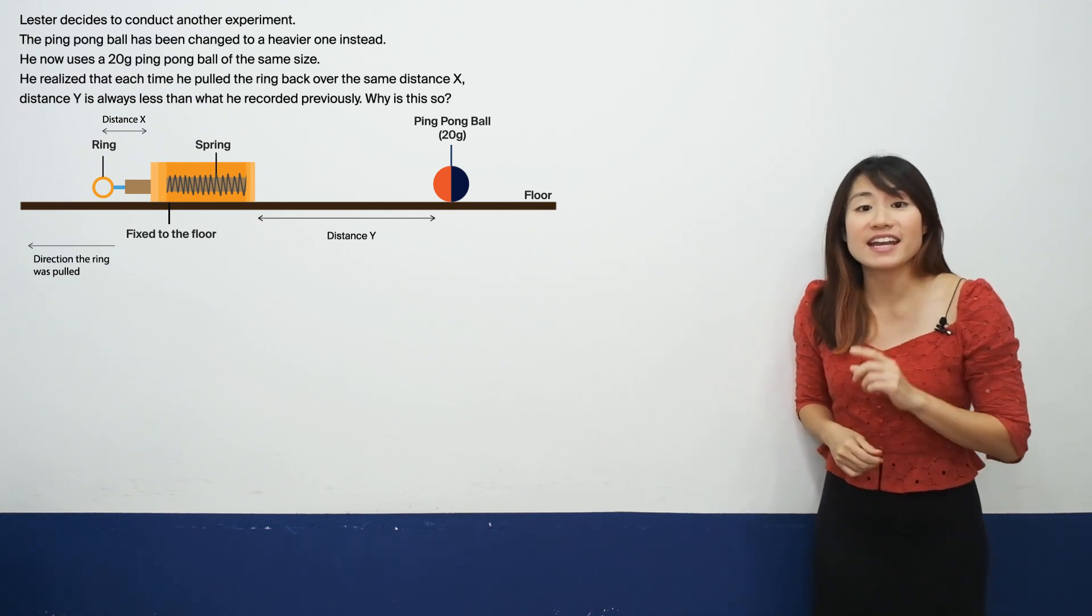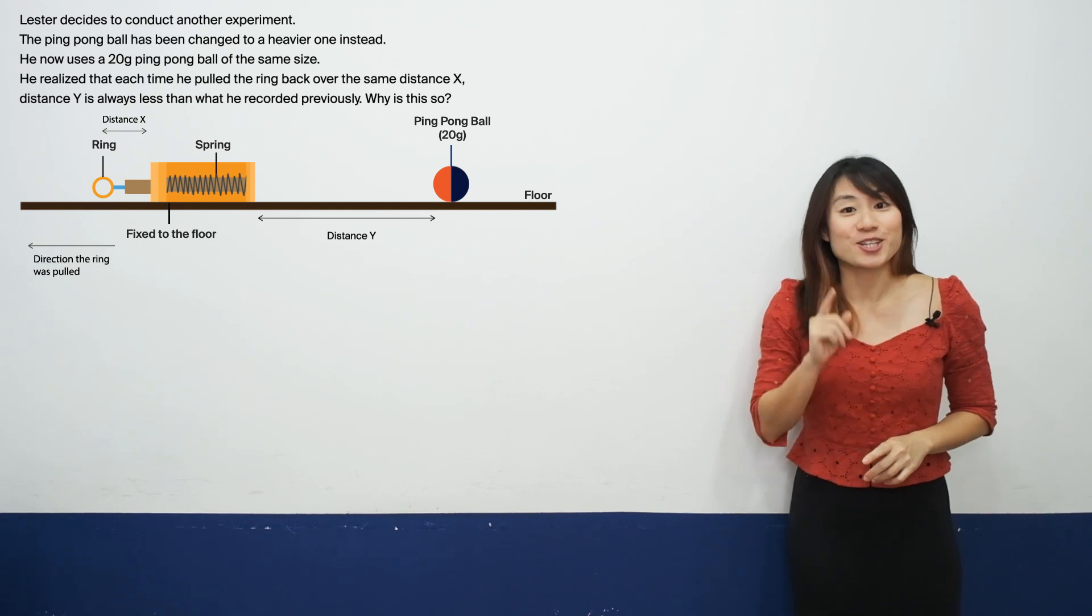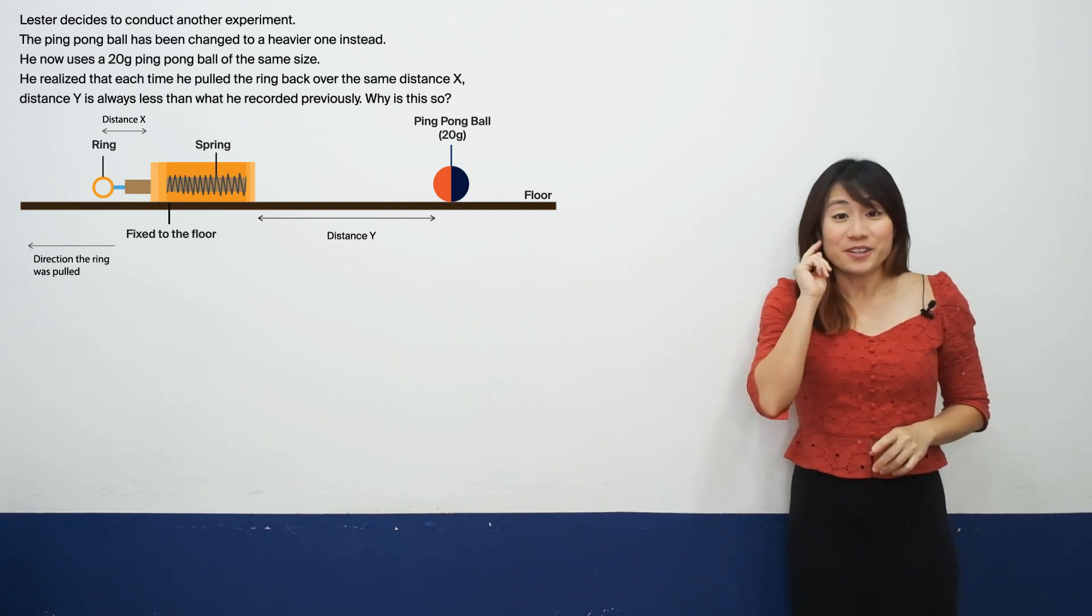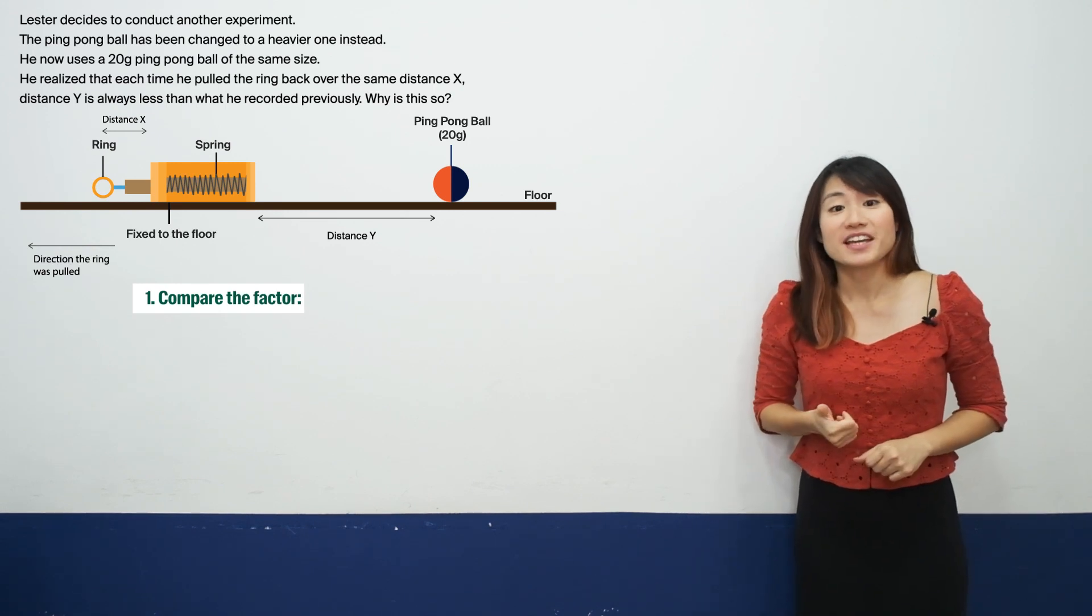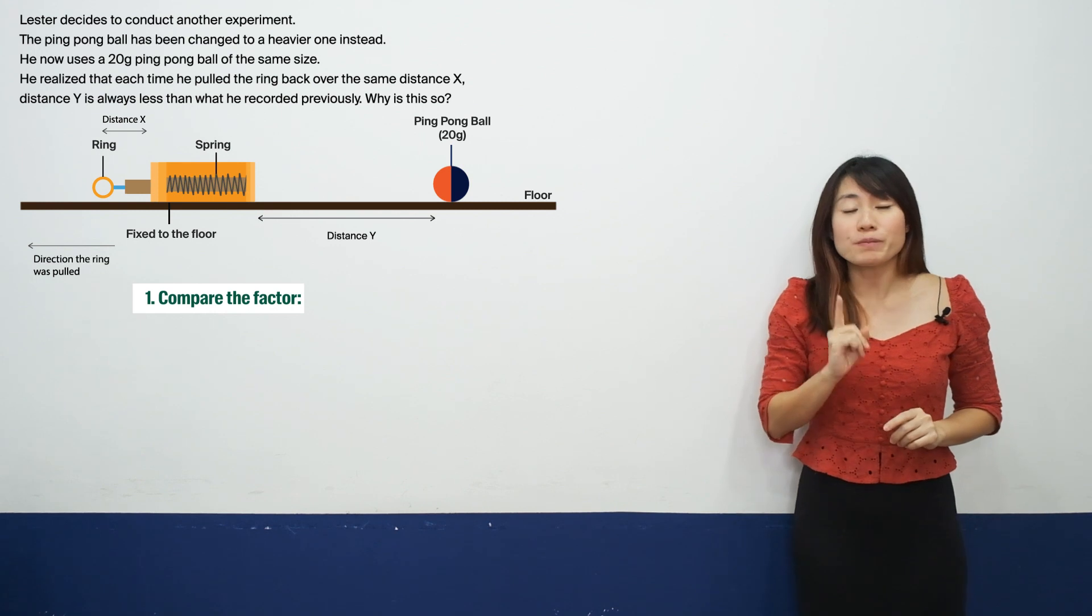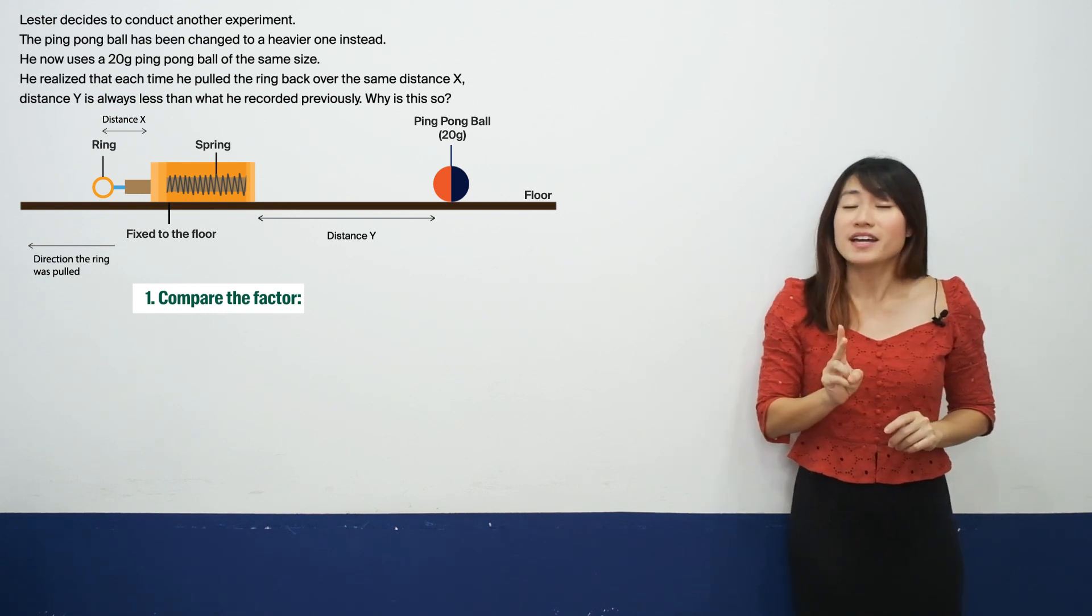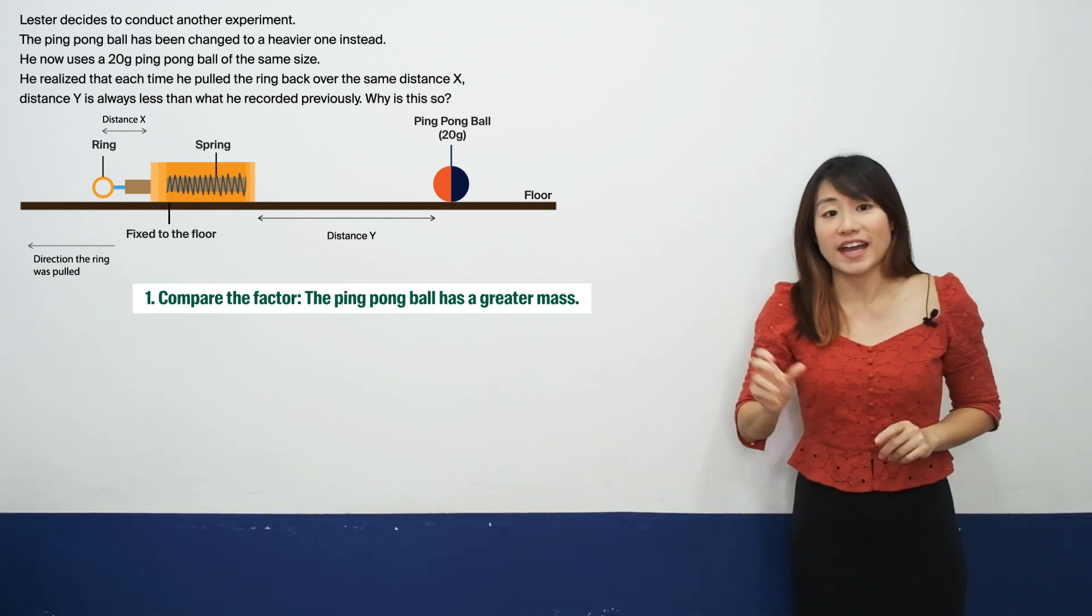Remember that for both forces and energy, they both share a similar answering technique. Do you remember what it is? It's the first step, which is compare the factor. Now, in this case, we will start by identifying that the new ping pong ball which is 20 gram, has a greater mass. So the word mass here is the factor.